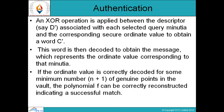The decoded message represents the ordinate value corresponding to the minutia — that is, the x-axis and y-axis coordinate values. If the ordinate value is correctly decoded for some minimum number of genuine points, then the polynomial f can be correctly reconstructed, indicating a successful match.